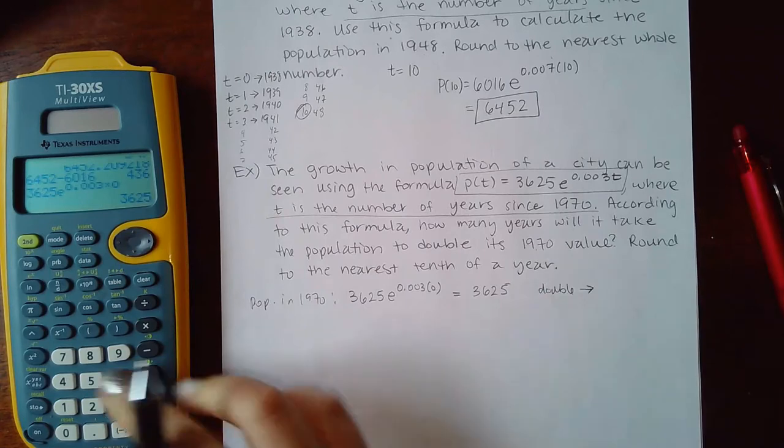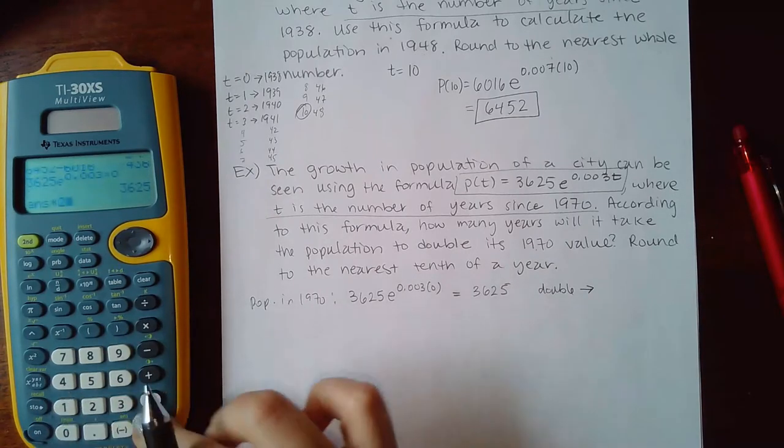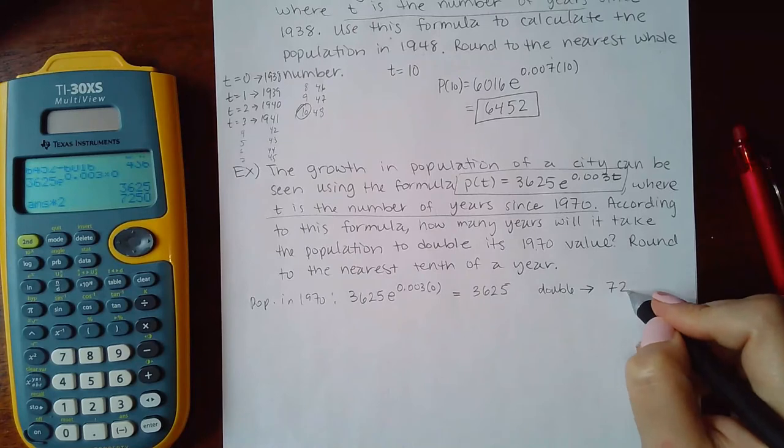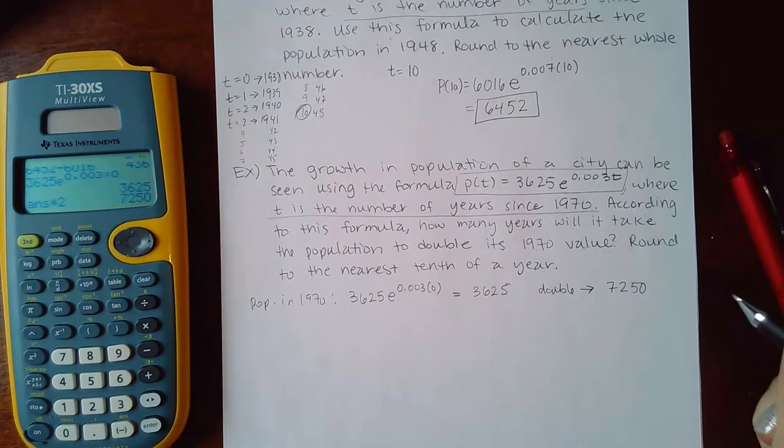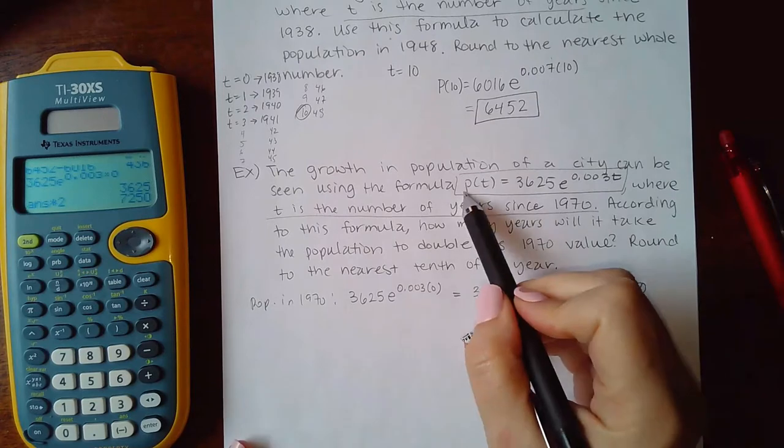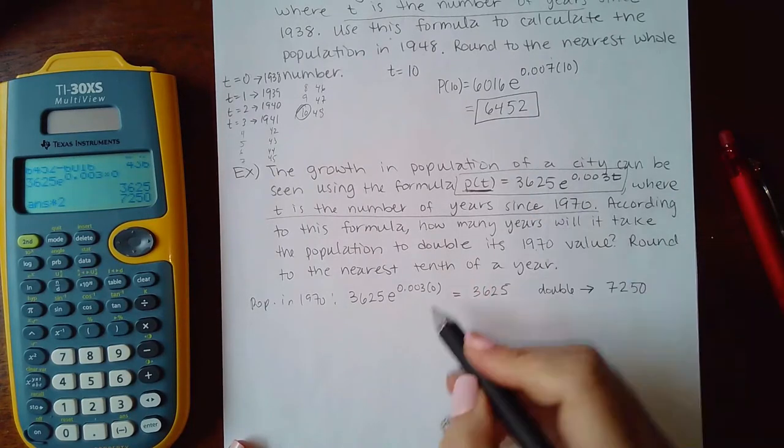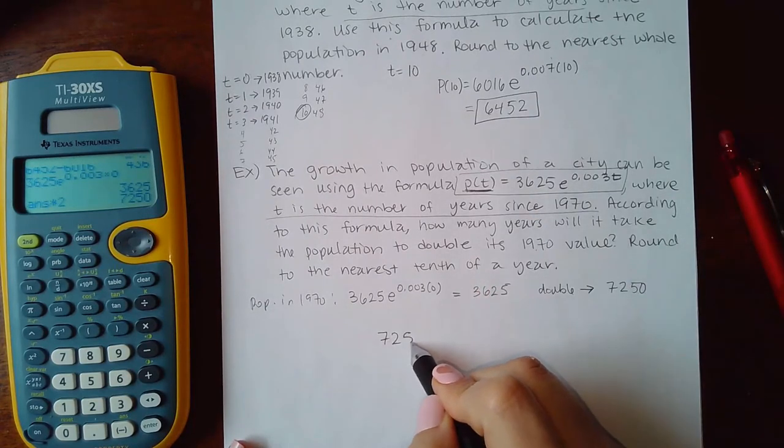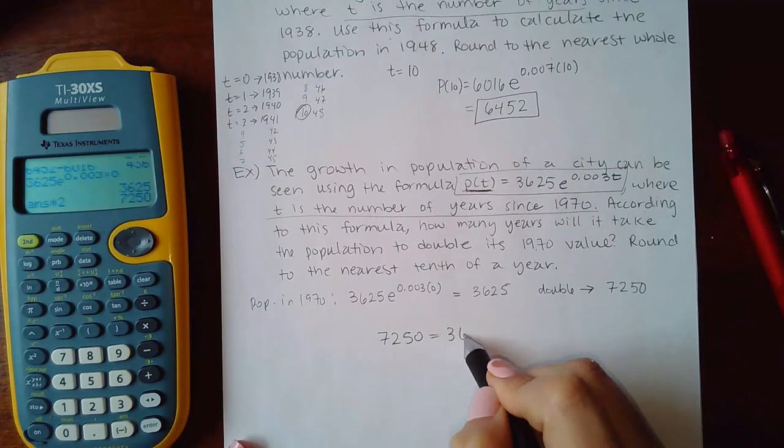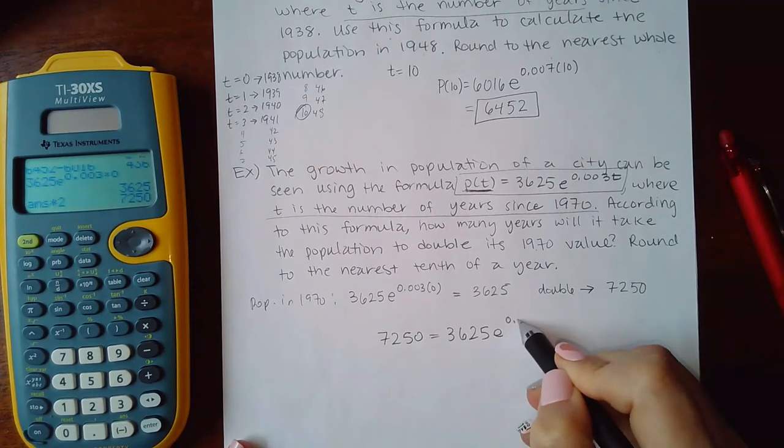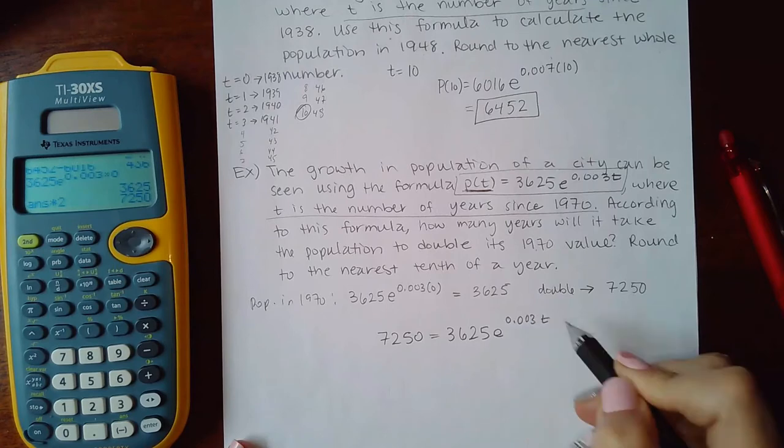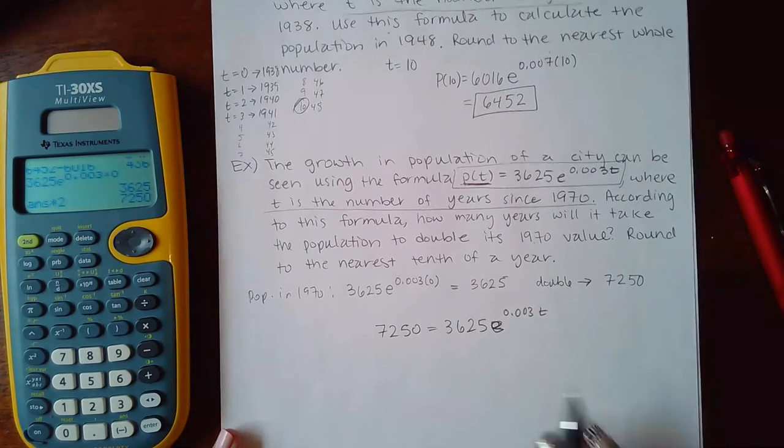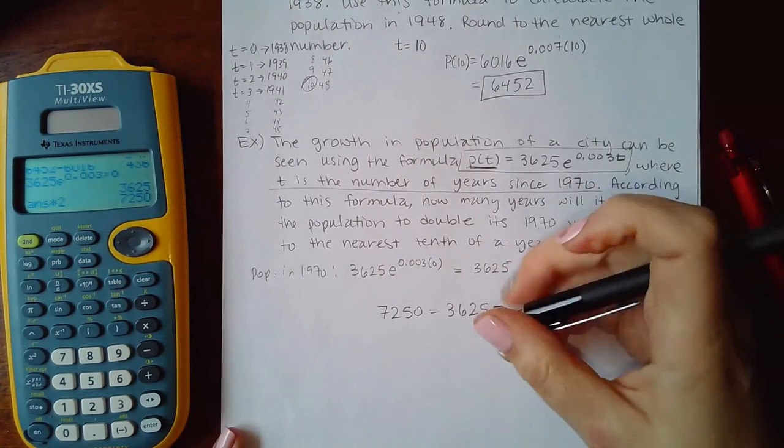So now if I want that to double, that would be 3625 times 2, which would mean 7250. So it wants to know how long it would take for the population to double, so now I know that the population would be 7250 and I've got to find out how many years have passed to make this happen. So I do have an exponential function.